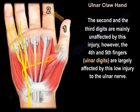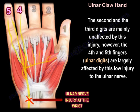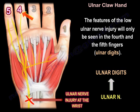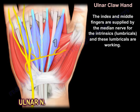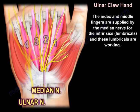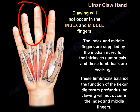The second and third digits are mainly unaffected by this injury. However, the fourth and fifth fingers — the ulnar digits — are largely affected by this low injury to the ulnar nerve. The features of the low ulnar nerve injury will only be seen in the fourth and fifth fingers. The index and middle fingers are supplied by the median nerve for the intrinsics, the lumbricals, and these lumbricals are working. These lumbricals balance the function of the flexor digitorum profundus, so clawing will not occur in the index and middle fingers.